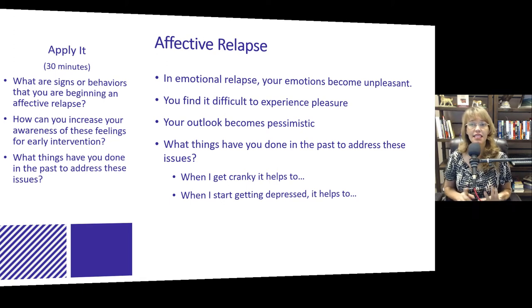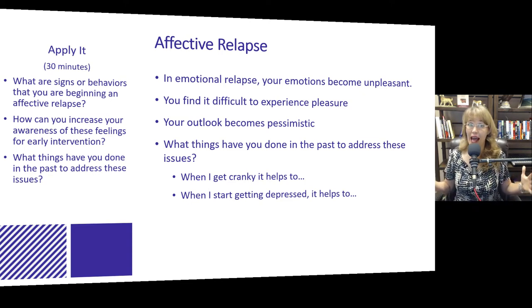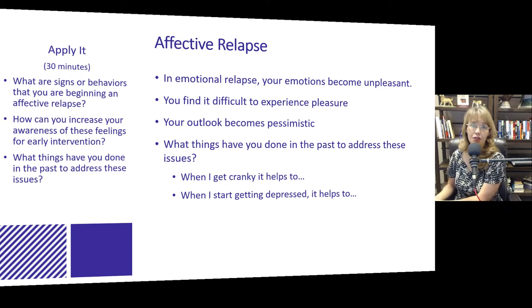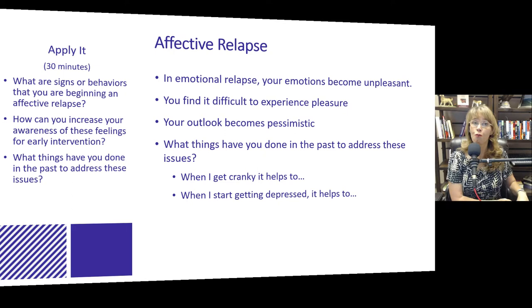Spend about 30 minutes thinking about the signs or behaviors that indicate you're beginning an affective relapse. It may be that you just don't want to do anything, or that you are getting depressed more easily. Remember, there are times things are going to happen — you may have a death in the family or something that triggers grief and overwhelming emotions. It's important to address those things so they don't lead to an ongoing affective relapse. Pain exists and bad things happen, but you need a plan for when they do — how do you keep it from moving you backwards in your recovery, whether it's depression, anger, or addiction?